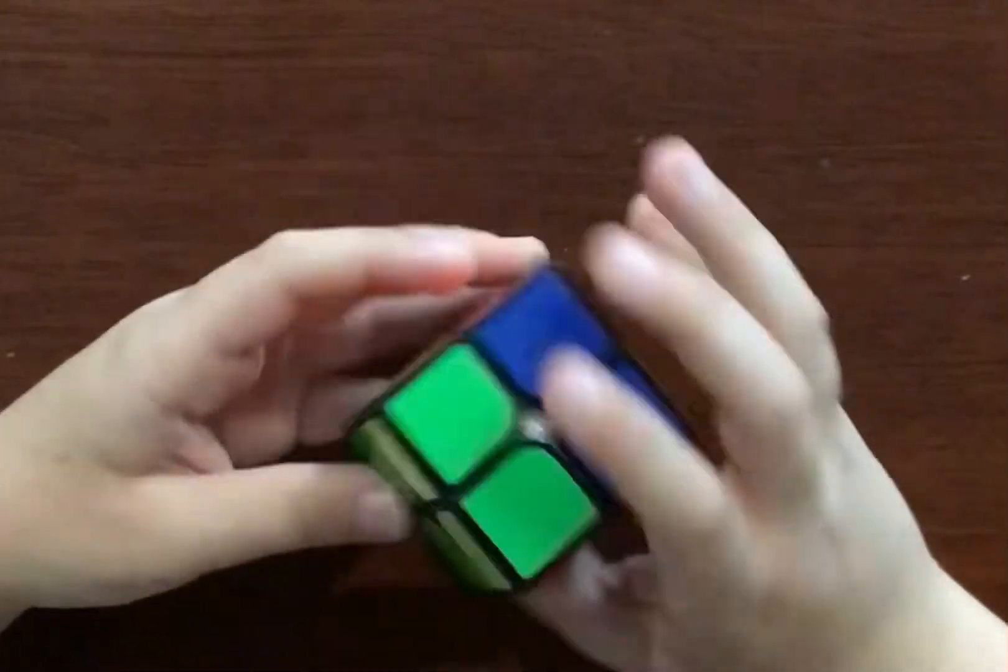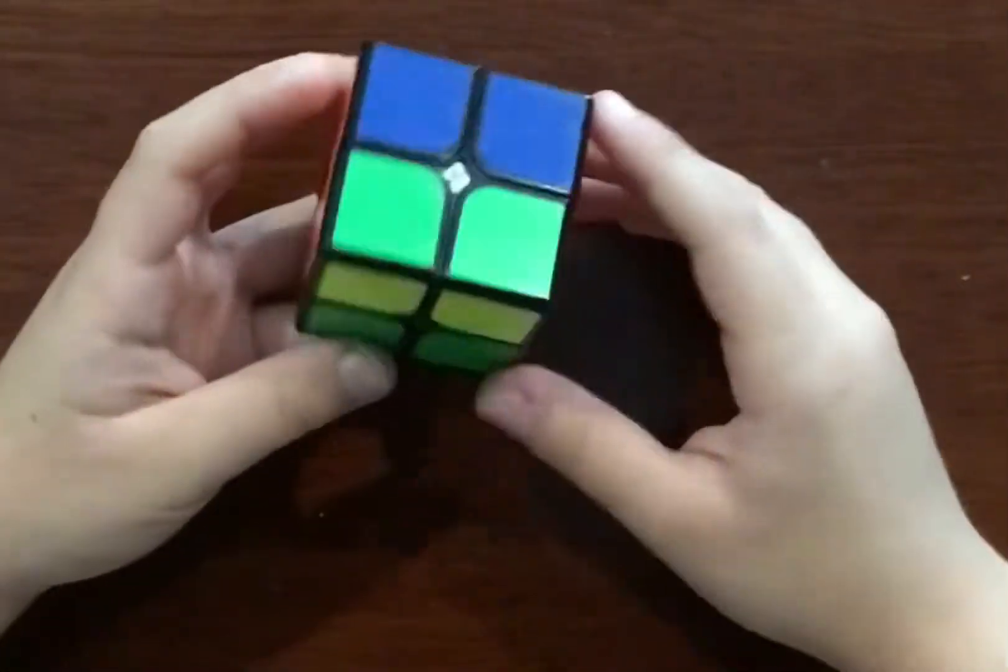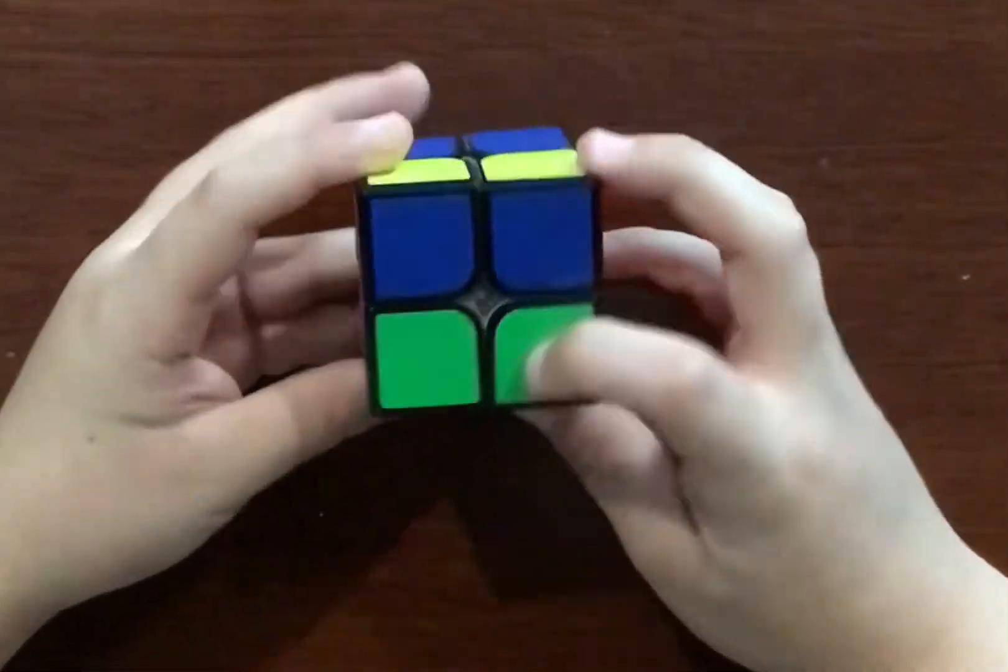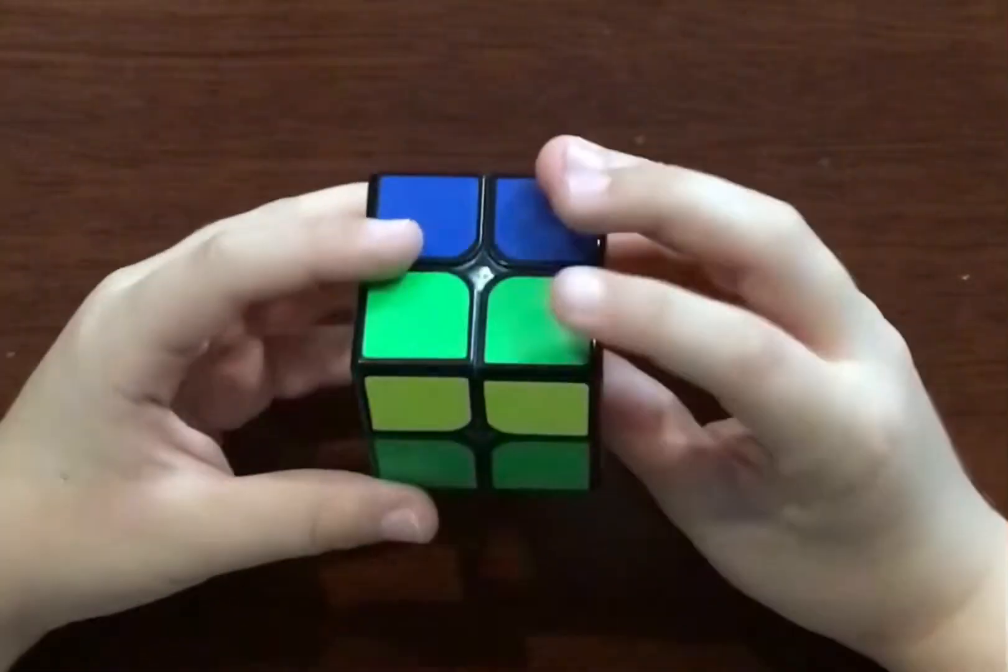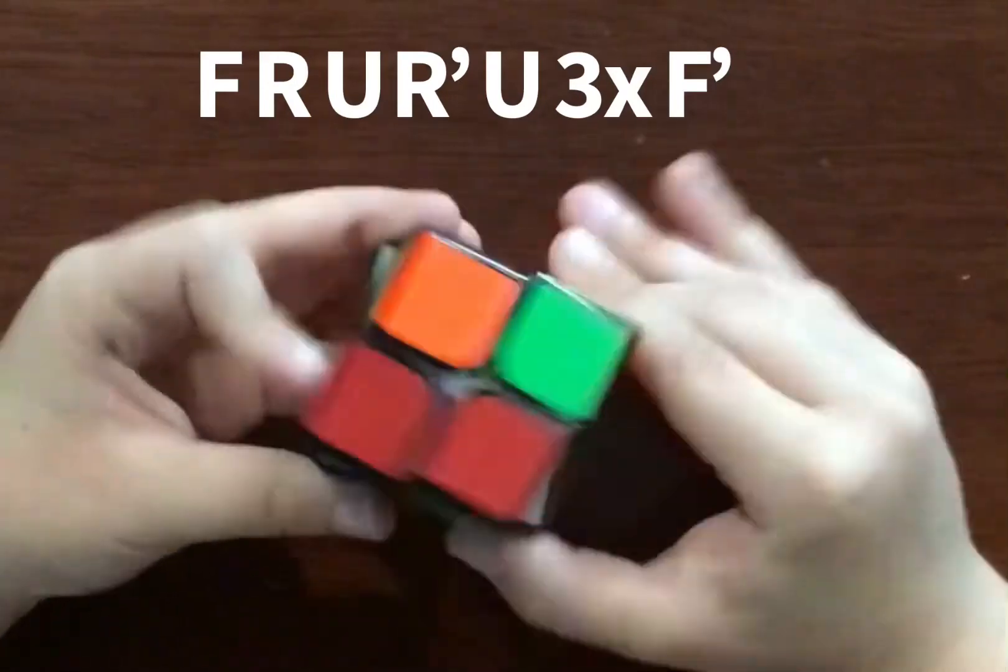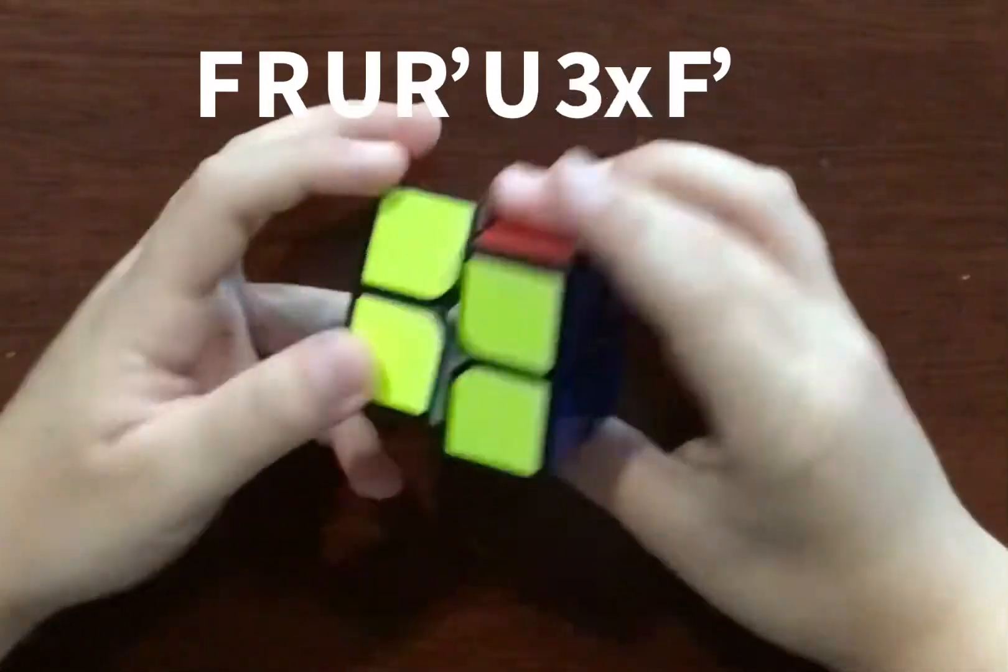You might have a case where there are two facing away from each other with nothing on this side. You make one face towards you, go F, R, U, R prime, U prime three times, solve the face.